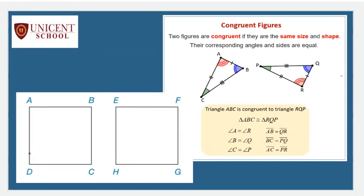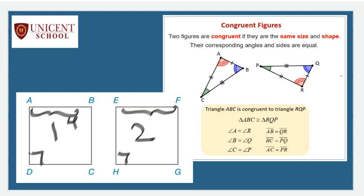Let us take an example of a square. I have two squares - square one and square two. When can I say that these two squares are congruent? I know that each angle of a square is 90 degrees, but is this property enough? No, we need to know their sides also. If the side length is four centimeters and the second square also has four centimeters, then the two squares are congruent. For circles, if the radius of two circles is the same, then the two circles are congruent.